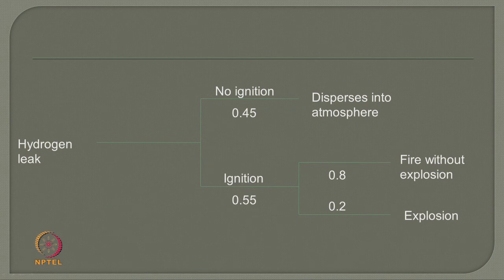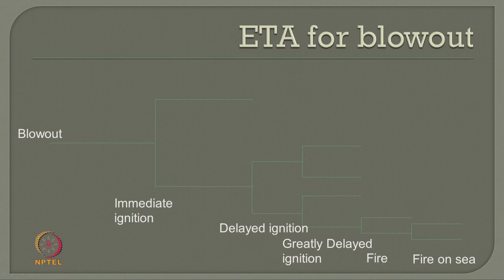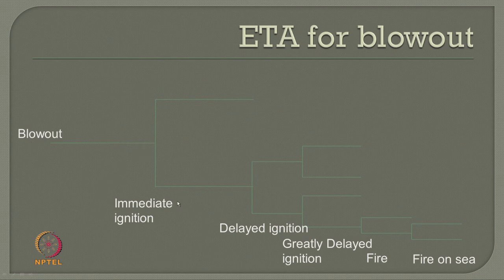ETA therefore looks intrinsically at the sequence of accidents whereas fault tree looks only at the probability of success of the final event. For a blowout ETA example, blowout can have two branches: immediate ignition and delayed ignition. Greatly delayed ignition can result in fire or fire on sea. A simple blowout can lead to many intrinsic discussions ultimately leading to fire, with detailed intermediate steps explained before reaching the final event — a level of detail not available in fault tree analysis.